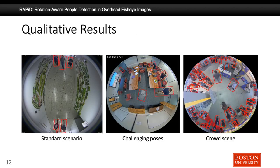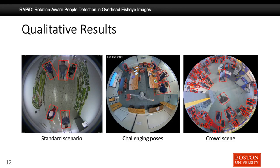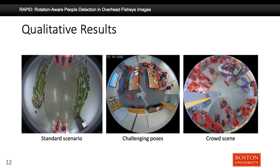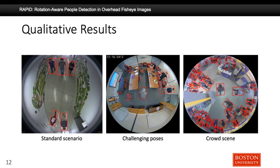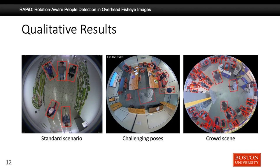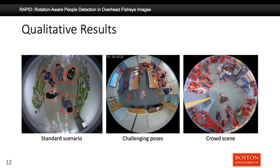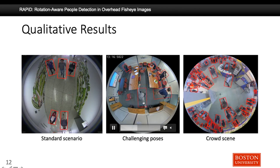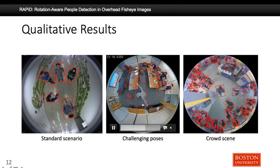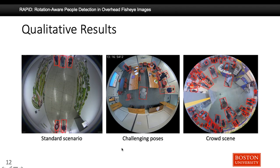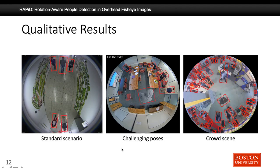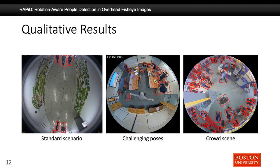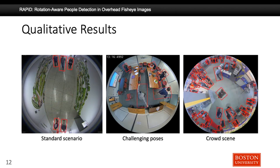Here you can see some visual results of RAPID. The leftmost video shows a standard non-crowded walking scenario. The middle one is a more challenging scenario due to variety of poses and movements. As you can see, RAPID performs very well in the middle region as well, detecting a variety of different orientations. The rightmost video shows an example of a crowded scene, and RAPID seems to perform very successfully by detecting most of the people in the video.